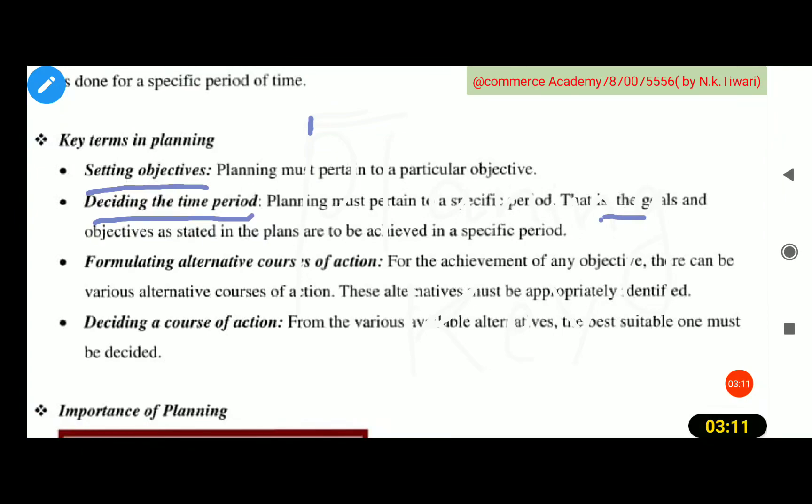Next is deciding the course of action. There are different methods to use to finish the work. Which method is suitable for you? You must consider it before starting your work. If you want to fulfill your objective on time, you must consider which method is appropriate to finish the work. So before planning, we must consider which method we will adopt to fulfill your work.